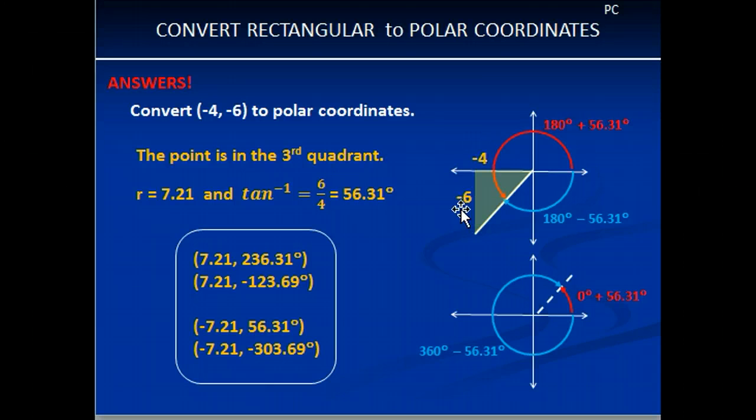The negatives in these cases, they tell us about a direction, and we don't need that in order to find out what theta is. So if it's 56.31, then if we're going to do the first one, 7.21 first.